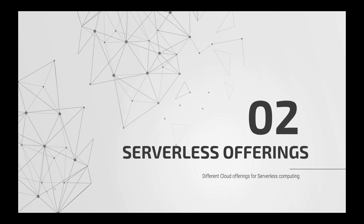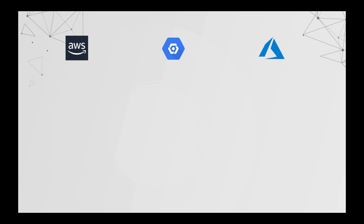Now, what are the different serverless offerings provided by the different cloud platforms? I'm picking up the three major ones: AWS Cloud, Google Cloud Platform, and Microsoft Azure. Serverless evolved into popularity with the introduction of Function as a Service. The first offering was from Amazon, called AWS Lambda. The same offering is available in other cloud platforms as Cloud Functions and Azure Cloud Functions.